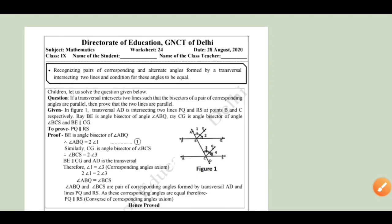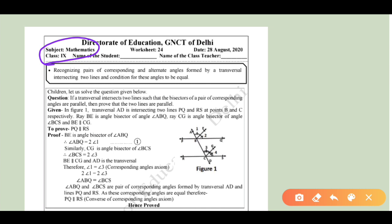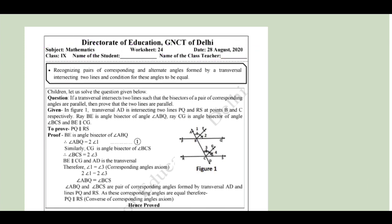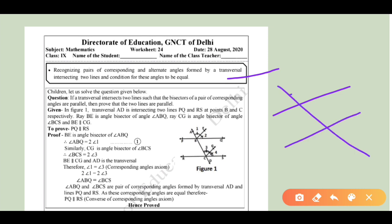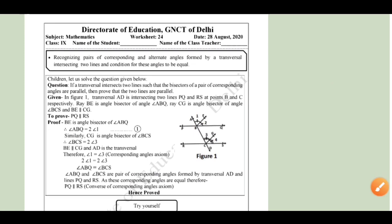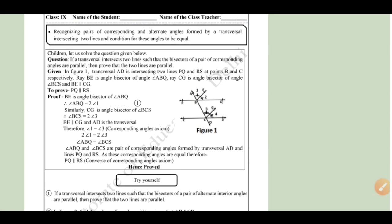Hello students, welcome to my YouTube channel. Today we are going to discuss mathematics Class 9 Worksheet Number 24, which will be released on 28th August 2020. Within this topic — lines and angles — we have first studied recognizing pairs of corresponding angles and alternate angles formed by a transversal intersecting two lines, and the conditions for these angles to be equal.